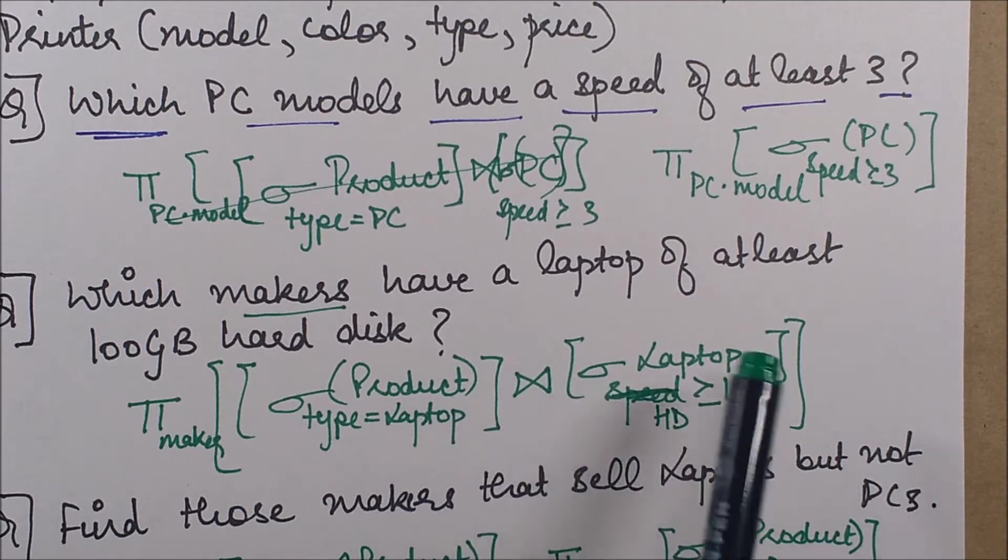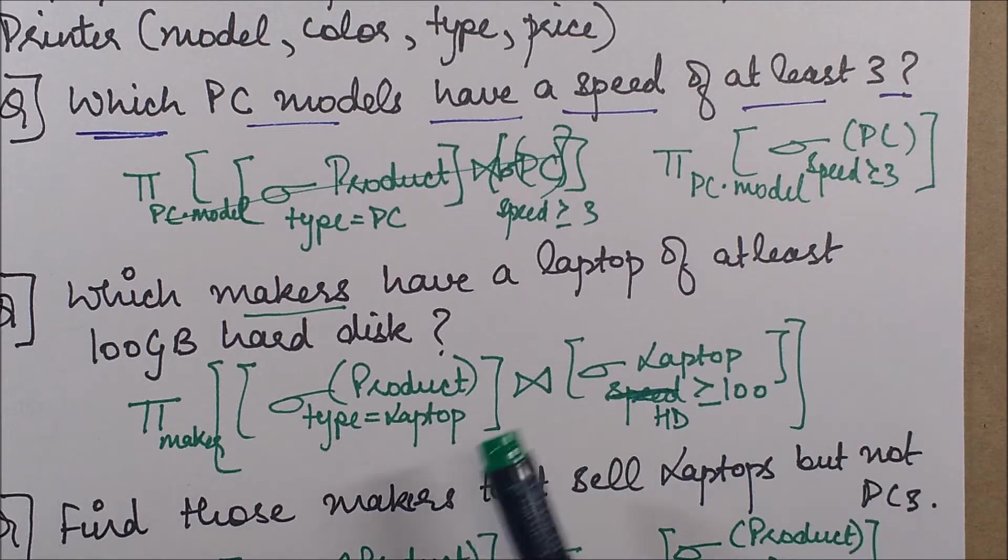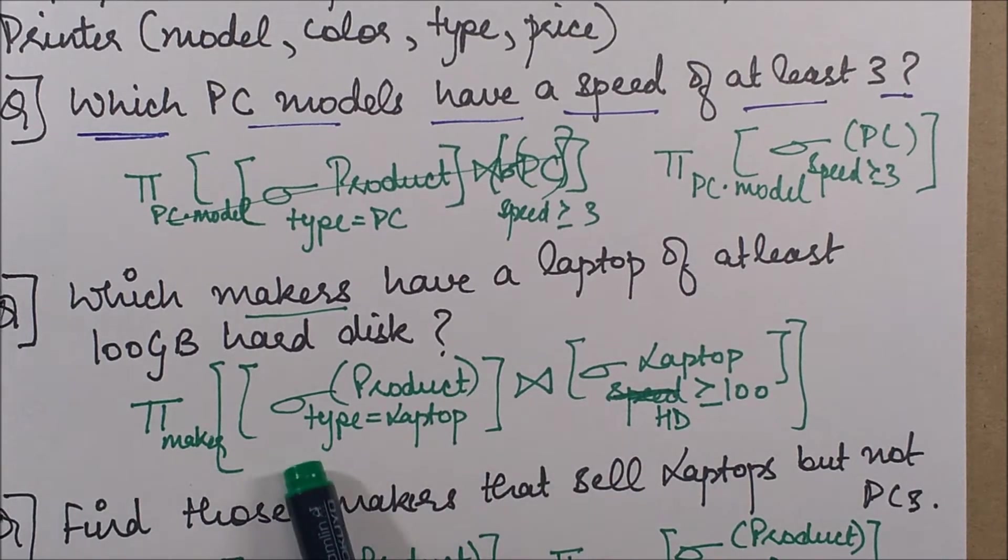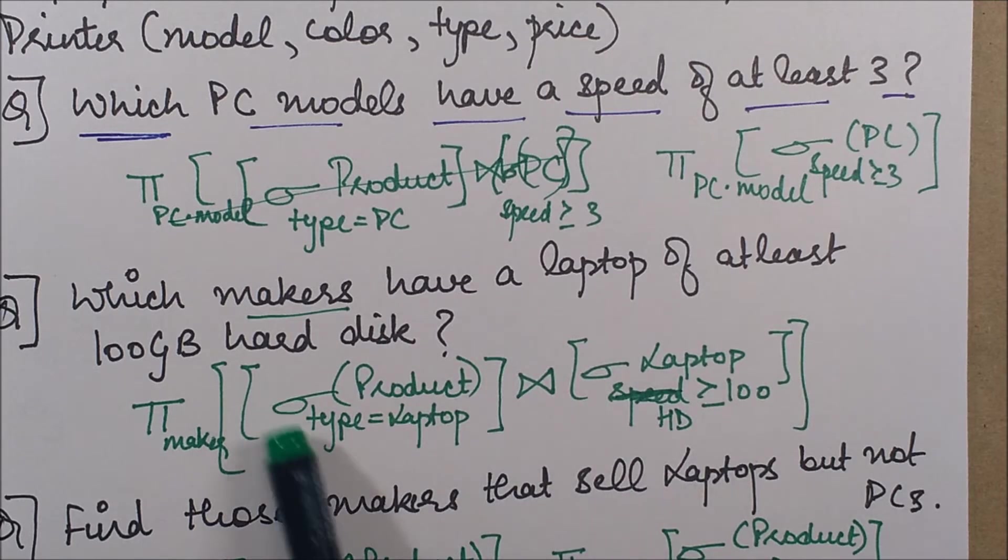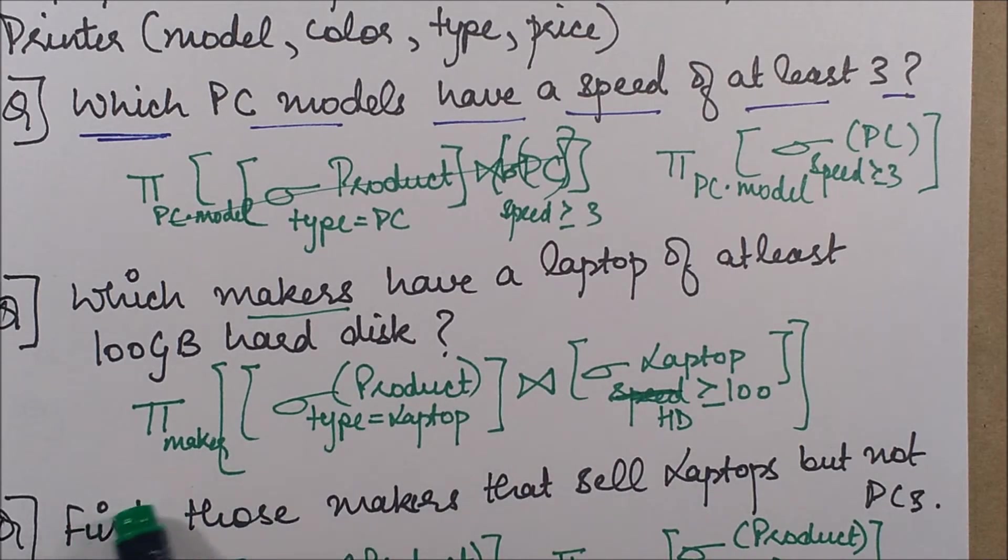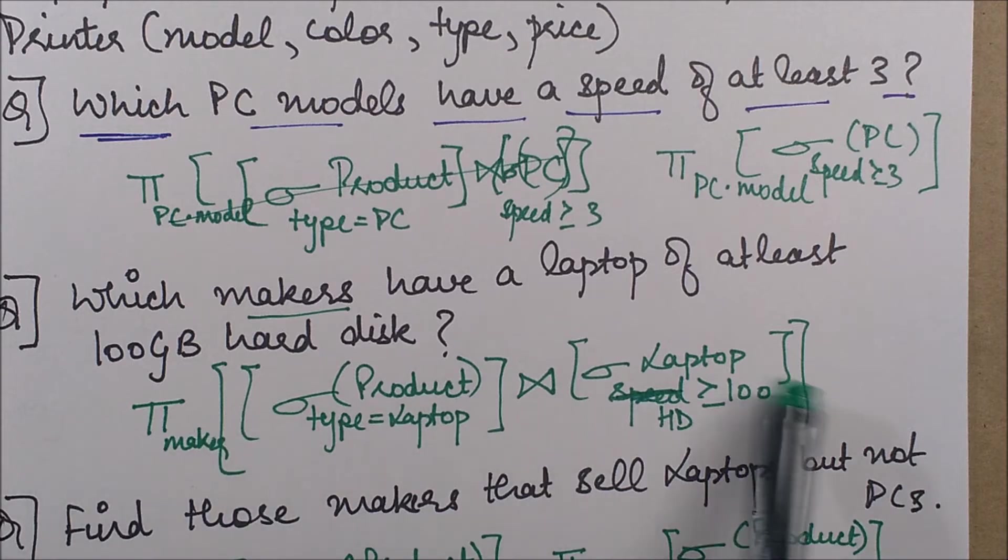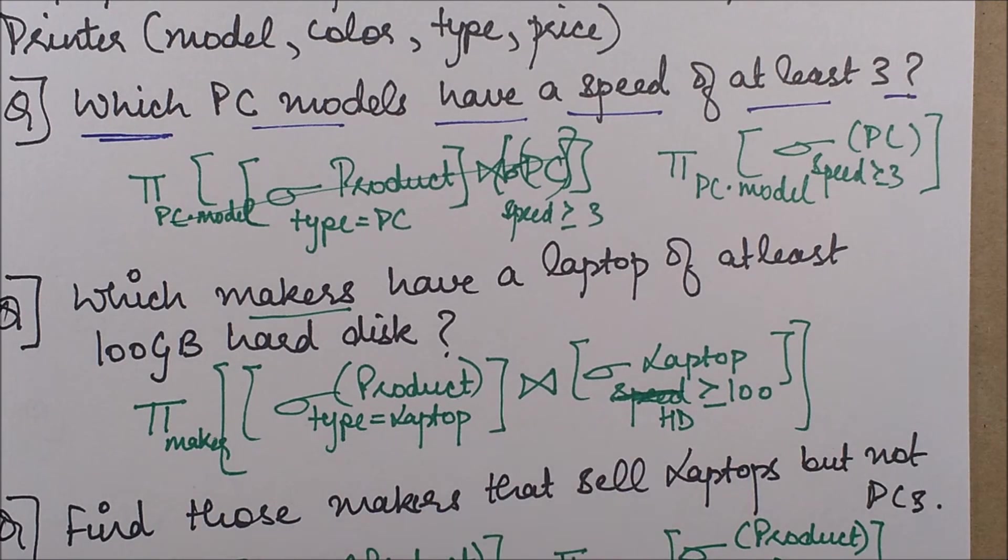And then, in order to obtain the makers information corresponding to them, I'll join it with the product table having type equals laptop. Now when this entire join table is there, I'll just project the makers satisfying these constraints. So that's all for this query.